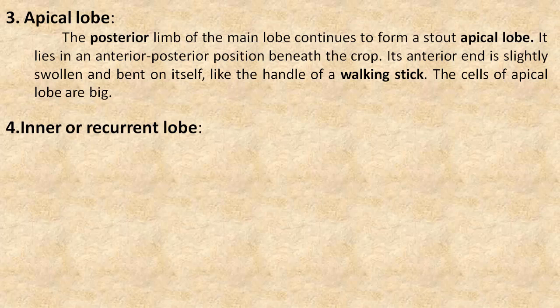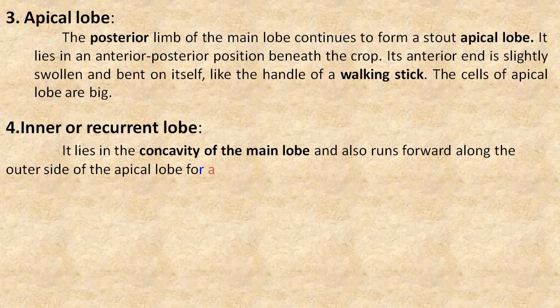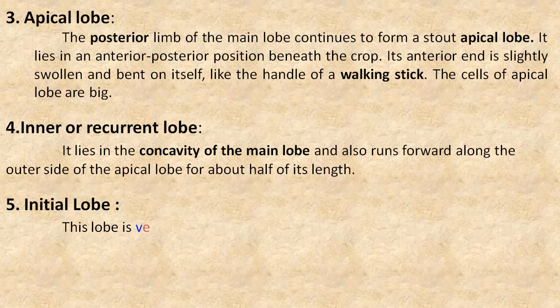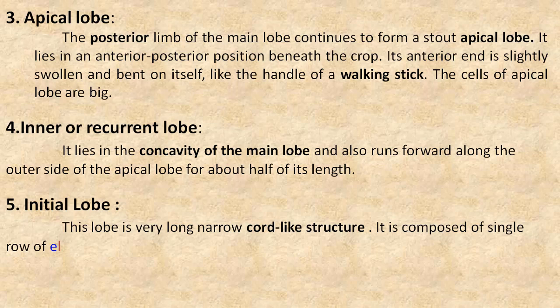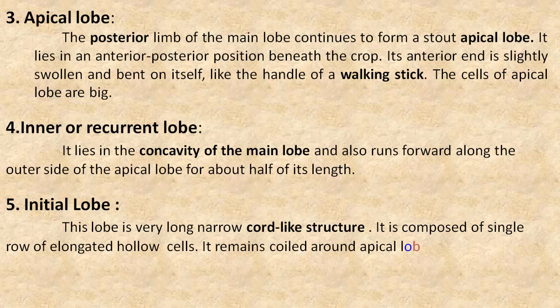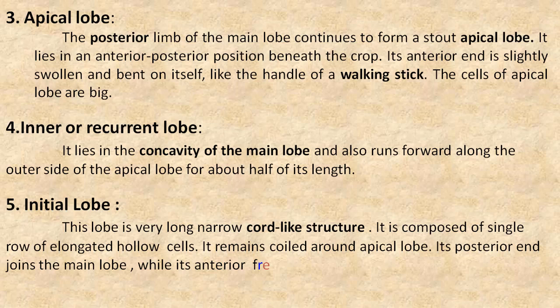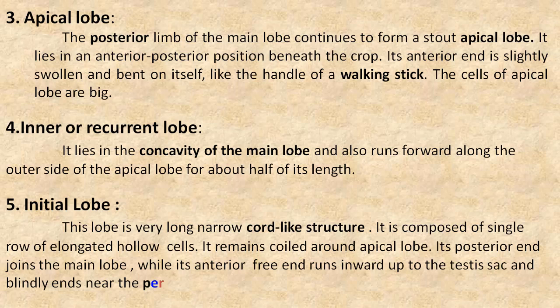Fourth is the inner or recurrent lobe. It lies in the concavity of the main lobe and also runs forward along the outer side of the apical lobe for about half of its length. Fifth is the initial lobe. This lobe is a very long, narrow, cord-like structure composed of a single row of elongated hollow cells. It remains coiled around the apical lobe. Its posterior end joins the main lobe while its anterior free end runs inward up to the testis sac and blindly ends near the perinephrostomal ampulla.